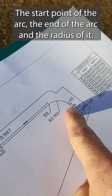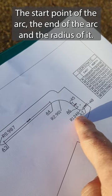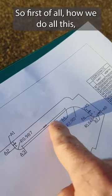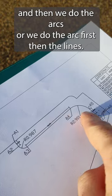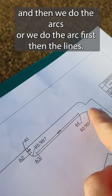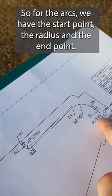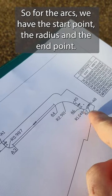The point of the arc, the end of the arc, and the radius of it. So first of all, how we do all this stakeout: we take out the lines first and then we do the arcs, or we do the arcs first then the lines. It doesn't really matter.